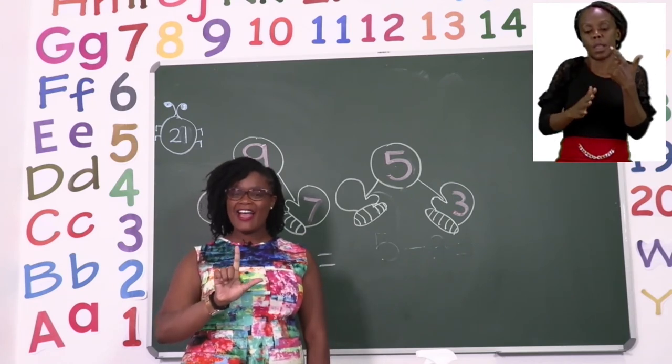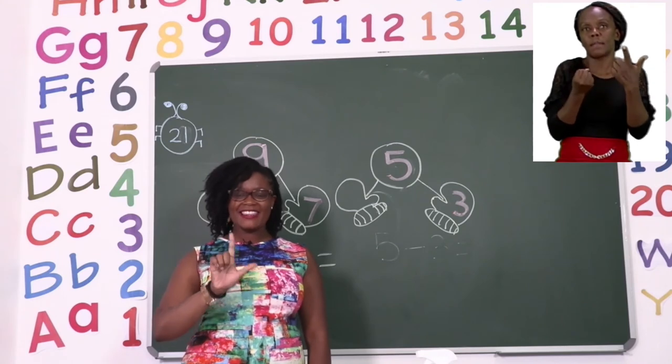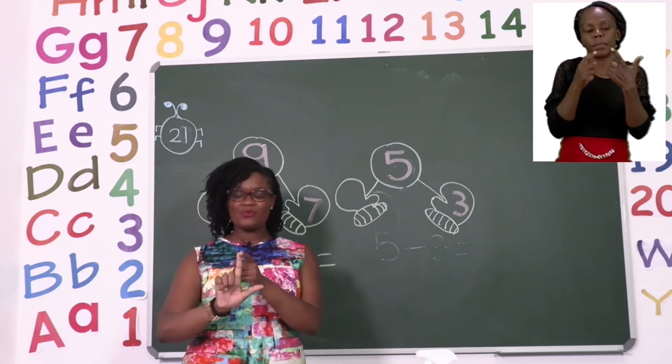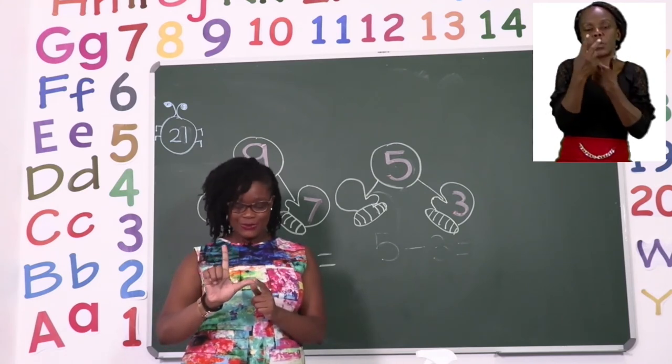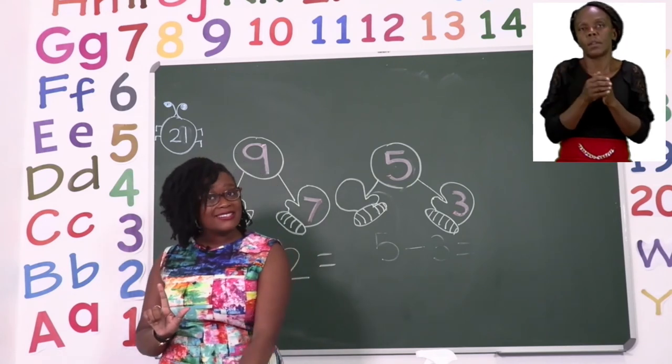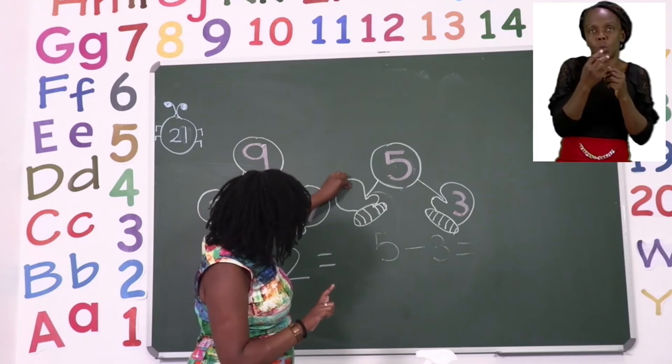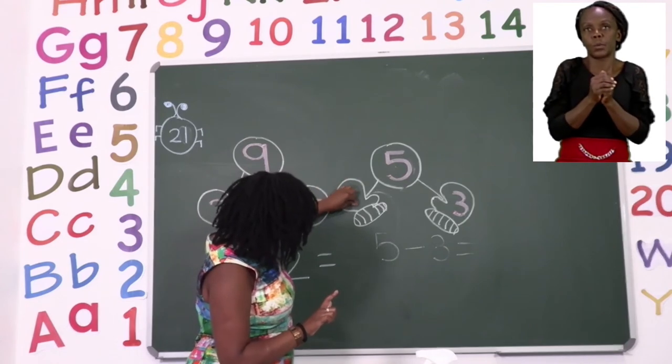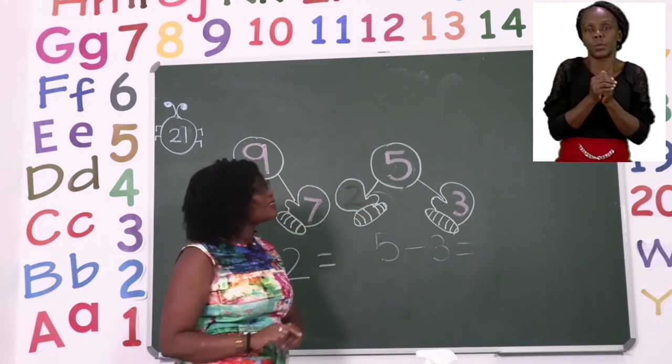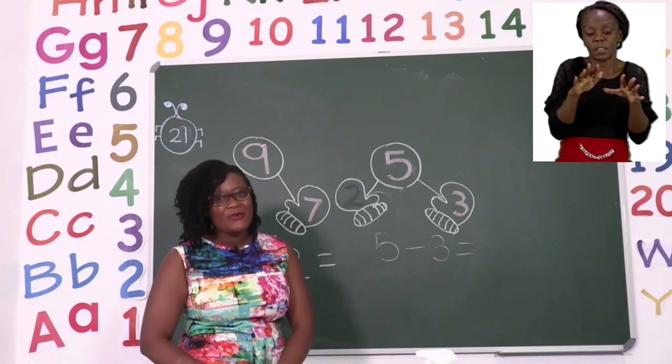So how many do I have left? That's right. I have one, two. So our answer is going to be two. Now we have a complete set of mittens.